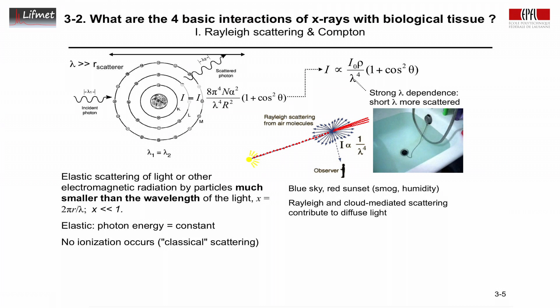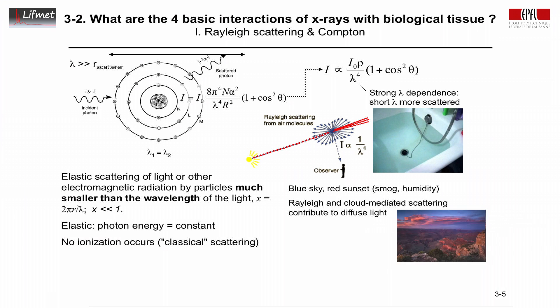Another effect is the red sunset. If you have a red sunset, it means there are scattering particles in the air — typically humidity or smoke. In areas with pollution, but not too strong, you can have beautiful red sunsets. The red sunsets are a manifestation of smoke in the air. Or if there's humidity, such as just before a thunderstorm, you also get very colorful, very red sunsets. This is illustrated here with a picture, and we will shortly show an experiment demonstrating Rayleigh scattering in a classroom setting.